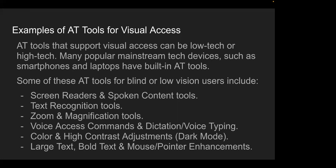As Jeffrey mentioned, a few examples of built-in accessibility features across devices include screen readers, spoken content tools, text recognition tools, zoom and magnification, voice access, and different contrast modes. There are a lot of different capabilities built into these devices, and we're going to try to give a high-level overview to give you a feel for what's available.